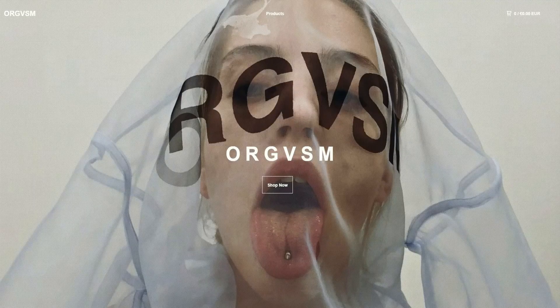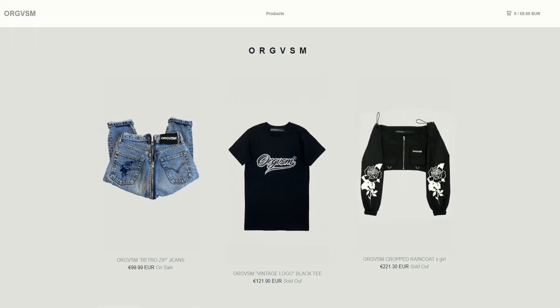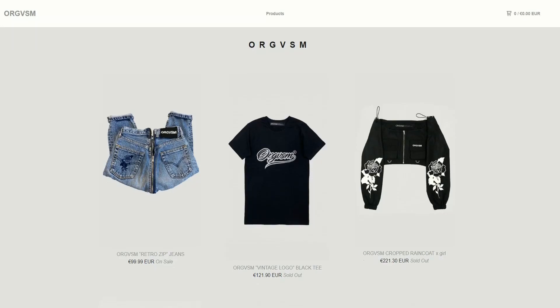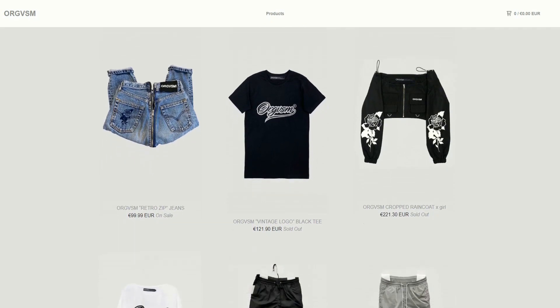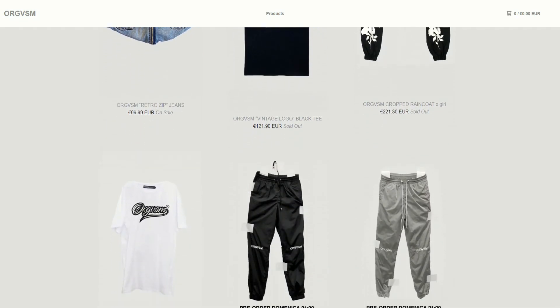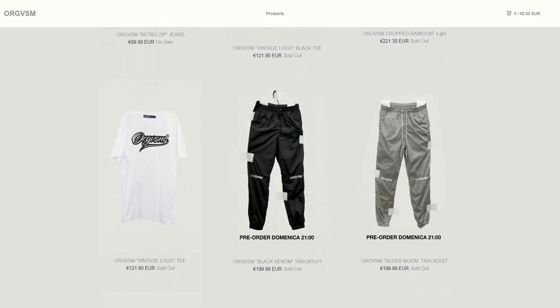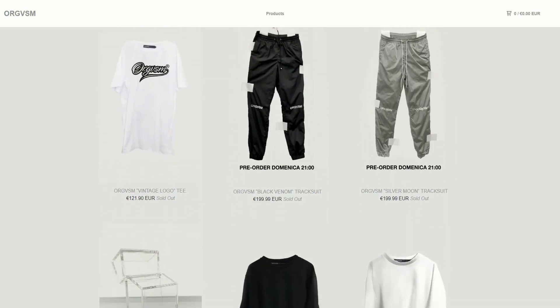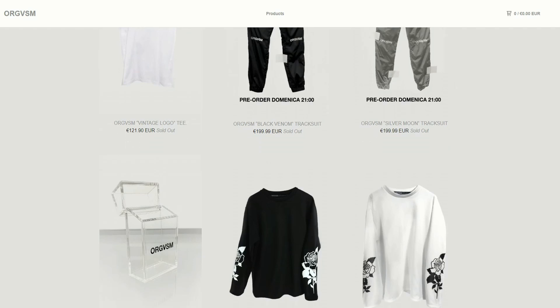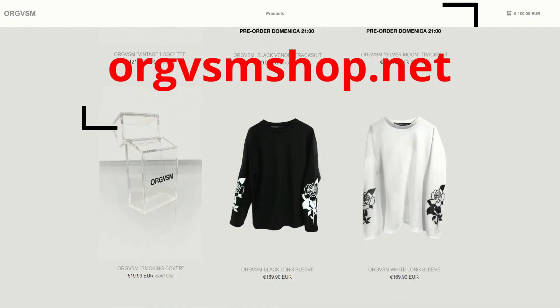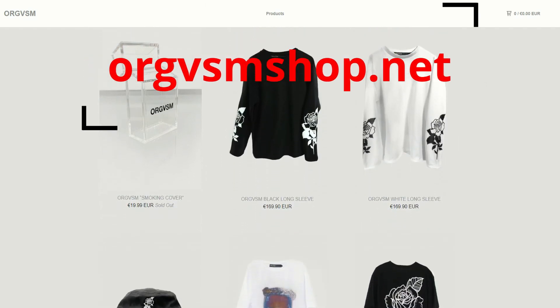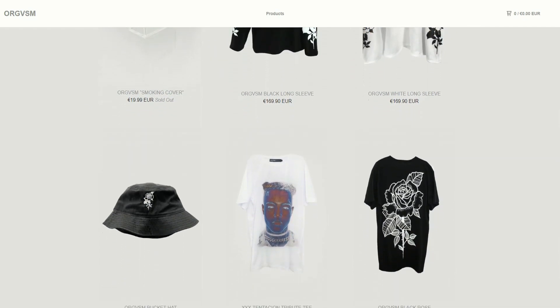Today's video is brought to you by ORGVSM, an online store where you can find shirts, jeans and cool accessories that fit your needs. All the products are made in Italy, they can be shipped worldwide, so don't waste your time, start looking fancy today. For more information go to orgvsmshop.net or check the link in the video description.